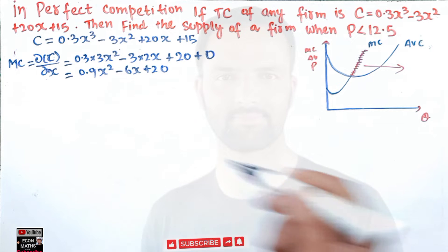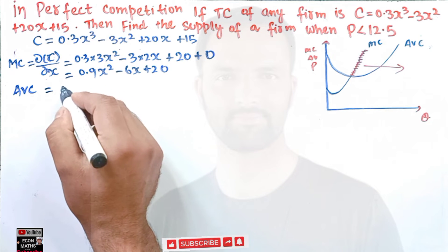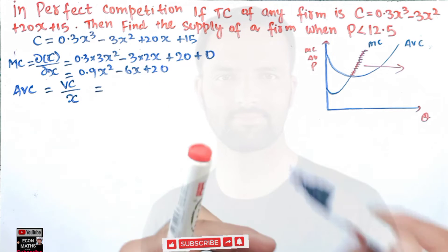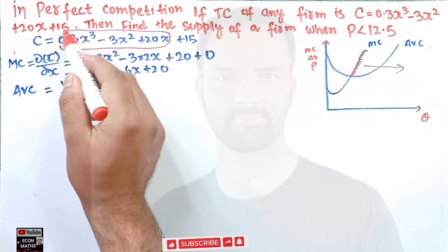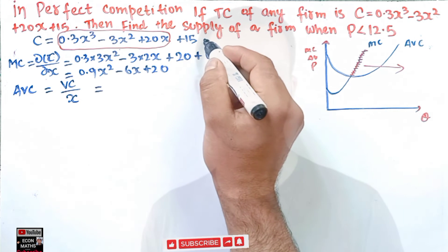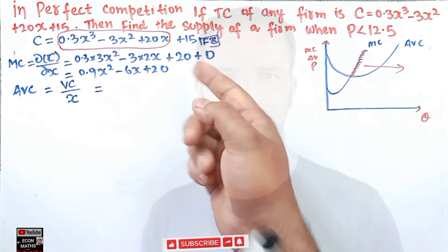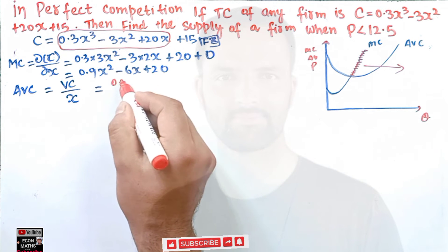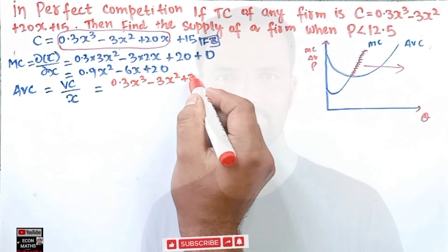Now we need to find the average variable cost. AVC = variable cost / x. In the total cost function, the terms 0.3x³ - 3x² + 20x are the variable costs, as they change with output. The constant 15 is the fixed cost since it does not depend on output. So variable cost = 0.3x³ - 3x² + 20x.